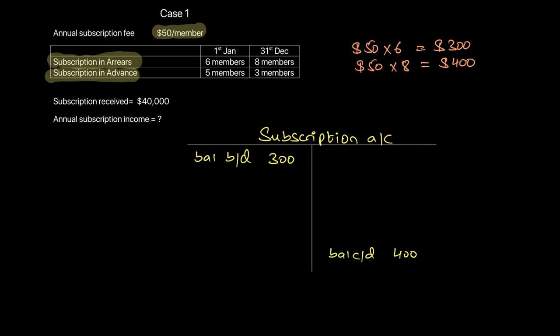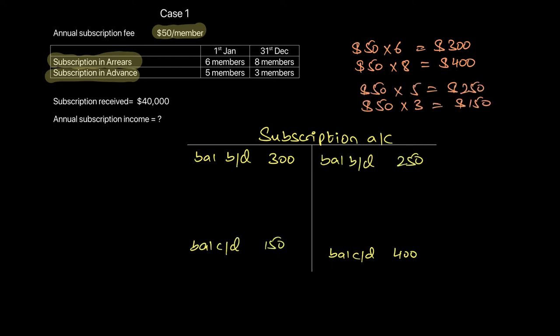Similarly, subscription received in advance is future income, which is a liability. Five members had paid at the start of the year for future services, and three members at the end of the year had paid for future services. So that's $250 and $150 — $50 into five and $50 into three. The opening liability of $250 is on the credit side as balance brought down, and $150 is your closing liability.